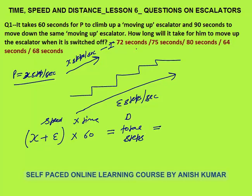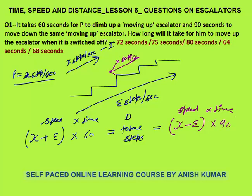Second situation: P is moving down on the moving-up escalator. His speed is x steps per second, but the escalator is pushing him back up, so effective speed is x minus e steps per second. Time taken is 90 seconds. Speed into time equals the same total distance — total steps of the escalator. So (x minus e) into 90 equals total steps.